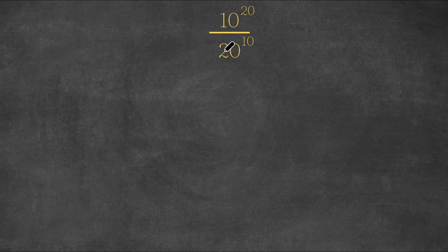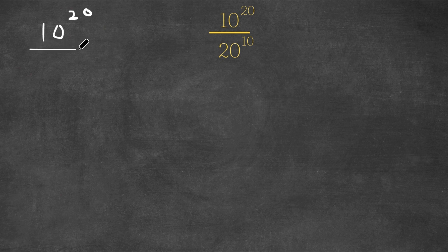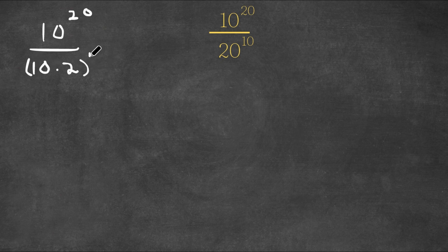Now I'm first going to rewrite this 20 as 2 times 10. So now I have 10 to the power of 20 over 10 times 2 to the power of 10.